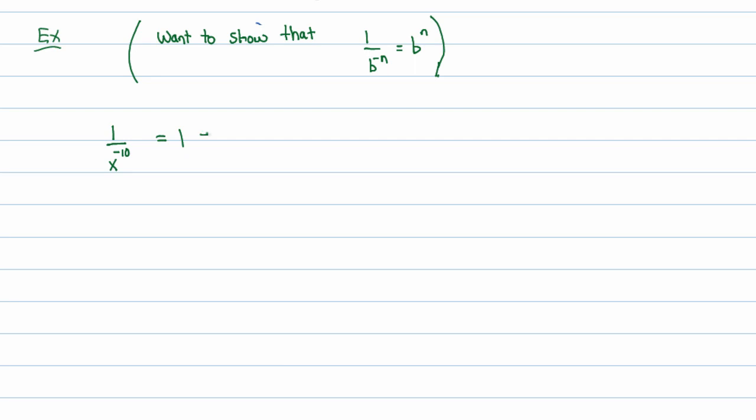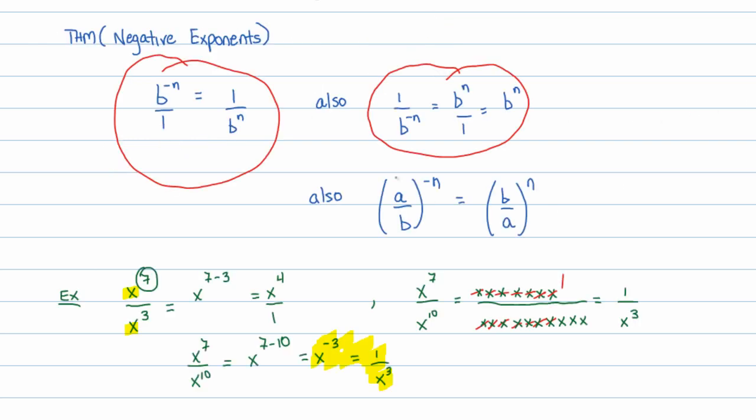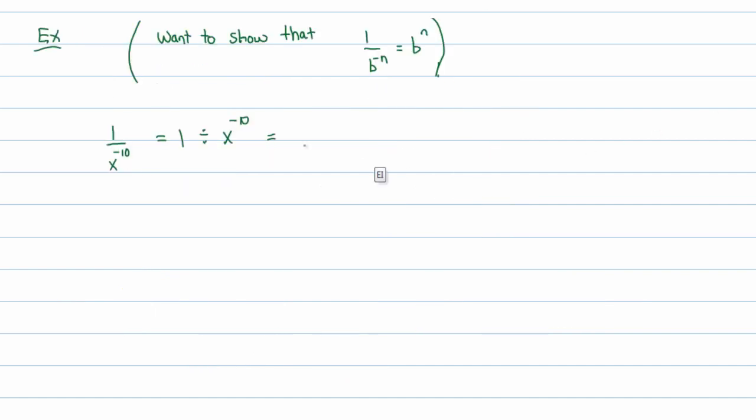Now I've already told you, first of all, I'll write this as 1 divided by x to the negative 10th power. I've already told you that x to the negative 10th power, if we look back at our theorem here, we already know that x to the negative 10th power is going to be 1 over x to the 10th power. So we should be okay with that. So let me go ahead and write that down. That x to the negative 10th should be 1 over x to the 10th.